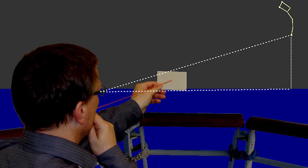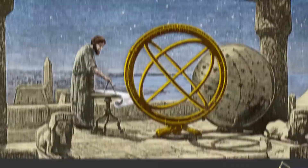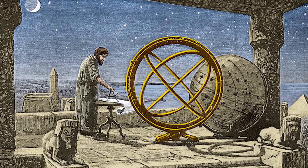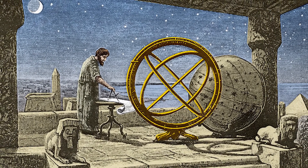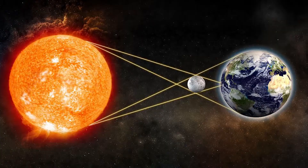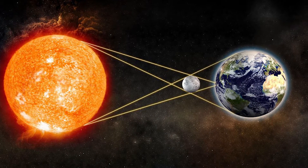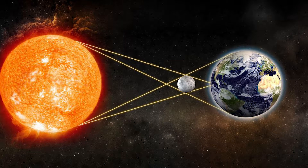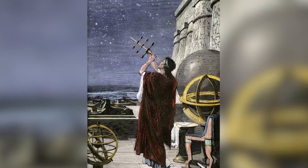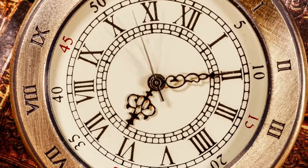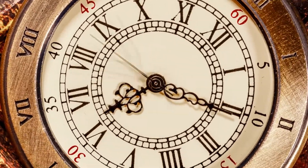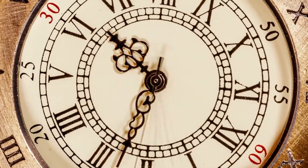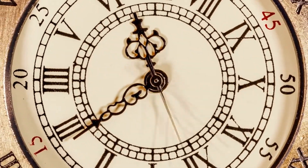Hipparchus advocated measuring longitude in the second century BC by collecting the periods when different regions observed solar eclipses. In theory this was a good idea, but with the timekeeping technology available at the time, it didn't appear to go very far.